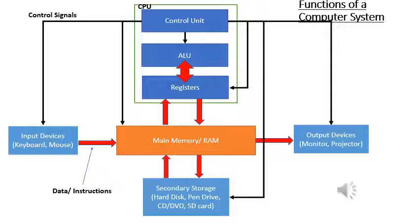The red color arrows show the way data and instructions are moved and handled. The black color signals are released by the control unit, which are called control signals. Those signals are used to control the devices in the computer system.